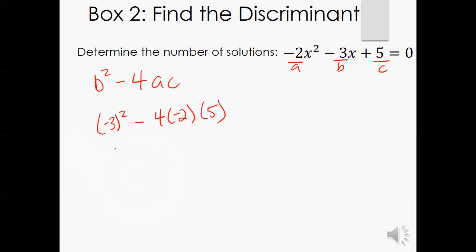Negative three squared is nine. Negative four times negative two is going to give me positive eight. Eight times five is going to give me 40. And this is going to give me 49. So I have a positive discriminant.